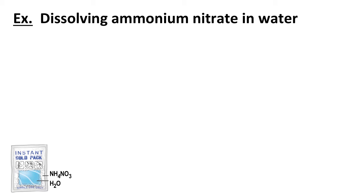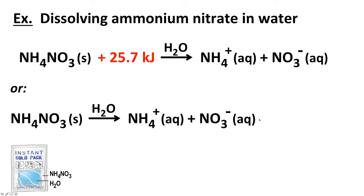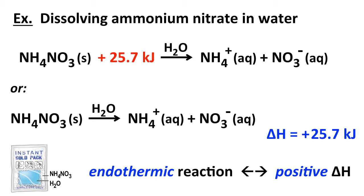Dissolving ammonium nitrate, NH4NO3, in water: when the solid dissolves, it makes ammonium ions and nitrate ions. When one mole of ammonium nitrate dissolves, it absorbs 25.7 kilojoules of heat. We write this as a thermochemical equation — one mole of NH4NO3 solid dissolving in water makes one mole of ammonium ions and one mole of nitrate ions — and the delta H is written explicitly as positive 25.7 kilojoules. This is an endothermic reaction, and therefore has a positive delta H.